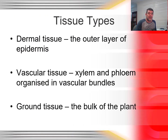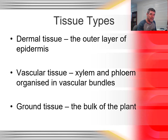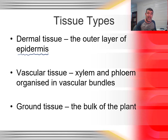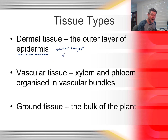The first thing we need to look at is tissue types in plants. In plants there are three basic types of tissue. The first type is dermal tissue, and for our purposes, the primary thing we're looking for in dermal tissue is the epidermis — usually the outer layer. It has responsibilities in water loss minimisation and also in gas exchange.